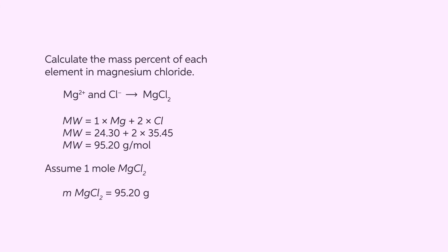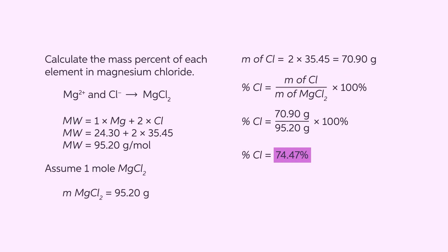We will use the same approach for chlorine. However, in this case, there are two chloride ions per formula unit. We have two moles of chloride per mole of magnesium chloride. Therefore, two times 35.45 grams per mole equals 70.90 grams of chloride. Using the mass percent formula, we divide the mass of chloride by the mass of magnesium chloride times 100 percent. This equals 74.47 percent.